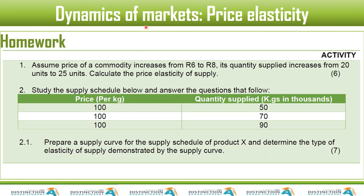Study the supply schedule below and answer the questions that follow. We have price on our vertical axis and quantity on our horizontal axis. The price is 100, 100, 100 — already you can tell what's going on: the price is remaining the same, but output is increasing. Prepare a supply curve from the supply schedule of product X and determine the type of elasticity of supply demonstrated. This is one of the easiest — it's an extreme case, and we only have two extreme cases where something stays constant.